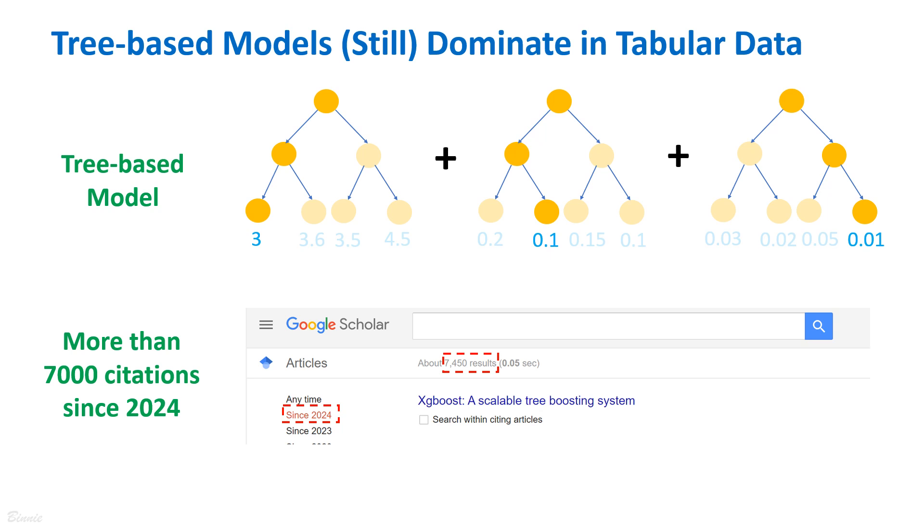We can also see that the XGBoost paper has more than 7,000 citations in the first eight months of 2024.